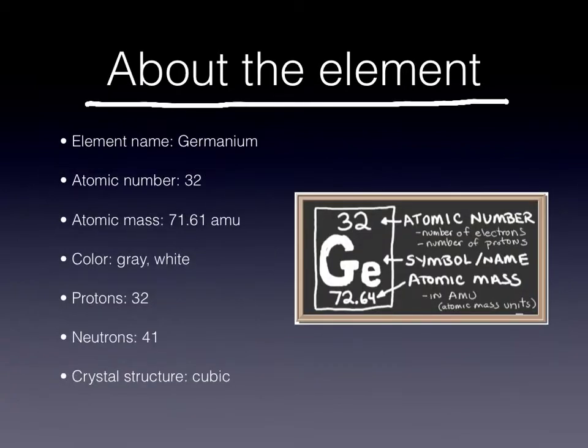About the element. The element name is Germanium. The atomic number is 32. The atomic mass is 71.61 AMUs. The color is gray and white. It has 32 protons, 41 neutrons, and its crystal structure is cubic.